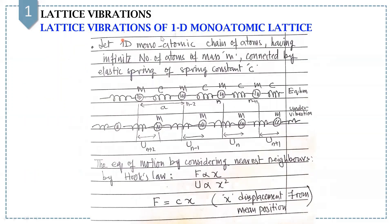Now we will discuss lattice vibrations of a one-dimensional monatomic lattice. Suppose we have a one-dimensional monatomic chain of atoms having an infinite number of atoms of mass M, which are connected by elastic springs of spring constant C.